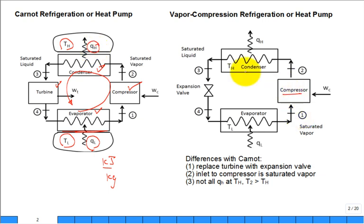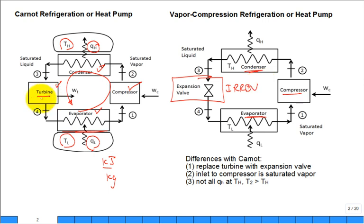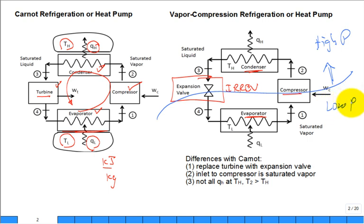What we do is keep the compressor, condenser, and evaporator, but get rid of the turbine and replace it with an expansion valve. That may seem really bad because expansion valves are irreversible, but it's not as bad as you might think, because the turbine wasn't going to produce much work anyway. What we really need is to drop that pressure — we just have two pressures: the high pressure side and the low pressure side. The turbine or expansion valve simply drops that pressure.